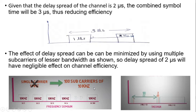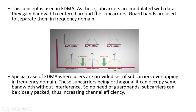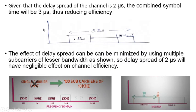With symbol duration of 100 microseconds, a delay spread of 2 microseconds has a negligible effect on the channel. So instead of a single carrier, if we use multiple subcarriers each of lesser bandwidth, the symbol time increases — as in this example it becomes 100 microseconds — and a delay spread of 2 microseconds becomes negligible, increasing channel efficiency. The concept is to use multiple subcarriers of lesser bandwidth to minimize the effect of delay spread.